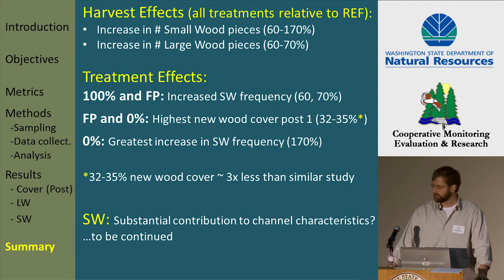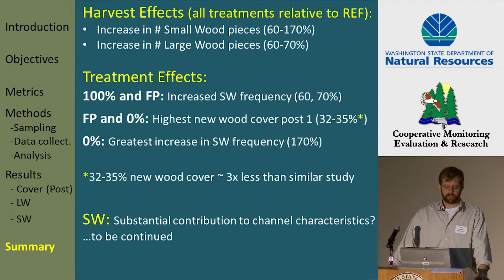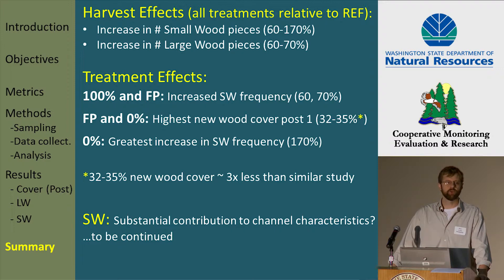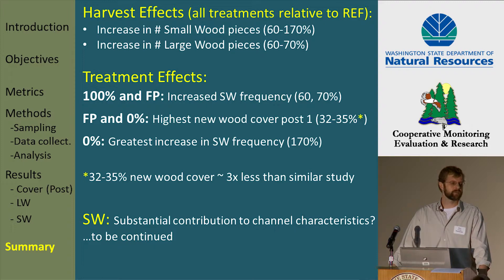Summarized in one slide: we did see an increase in small and large wood pieces in all treatments relative to the reference — what we're calling a harvest effect. Small wood appears in a couple places as both a harvest effect and a treatment effect: we saw an increase in those small wood pieces in the 100% forest practice grouping and our greatest increase in the 0% treatment. It was in the forest practice and 0% treatment group where we saw our highest average new wood cover in that first post-harvest year. A footnote: the 32% to 35% average cover in those two more extreme treatments is roughly three times less than the wood cover seen in the Jackson study.